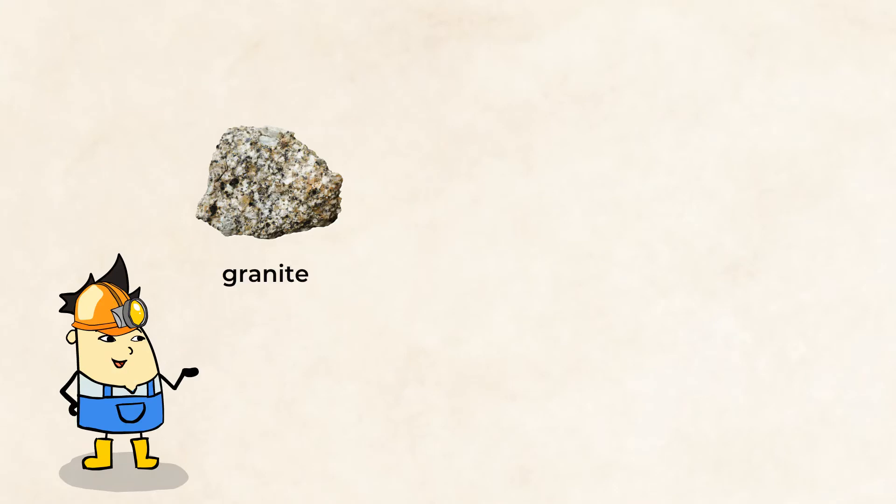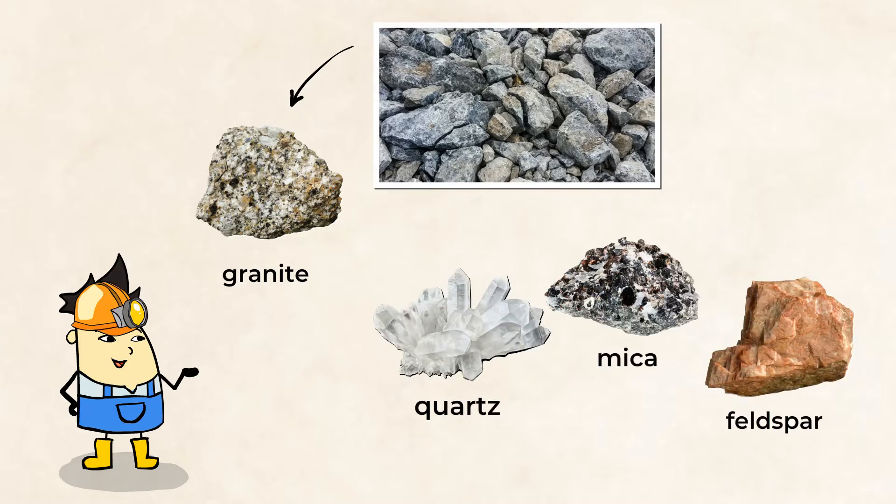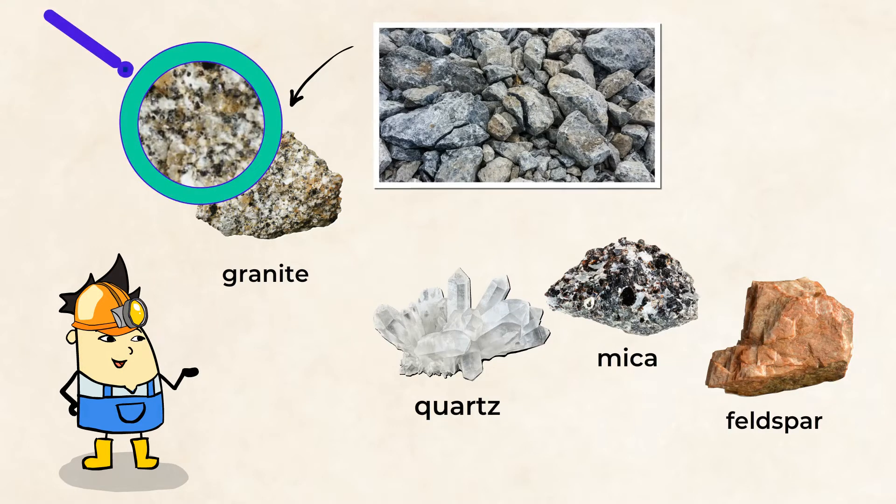Let's take a look at this piece of granite. Granite is a fascinating rock to observe. It's one of the most common rocks on Earth's crust. Granite is made up of many different minerals, like quartz, feldspar, mica, and others. And you can even see the different minerals pushed together in the rock if you look closely.